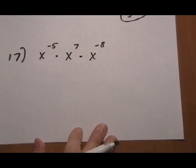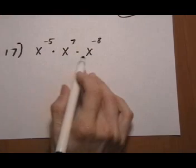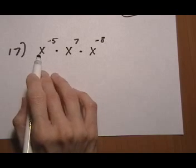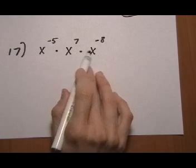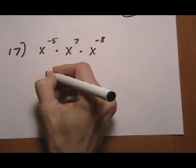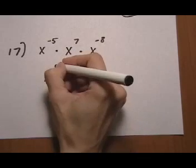Number 17, here we have a bunch of same bases. So always keep an eye out for same bases. Same bases being multiplied means add the exponents. That's the product rule. So we're going to go ahead and keep the base, add the exponents.